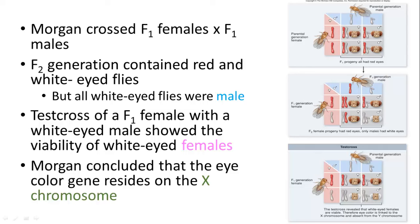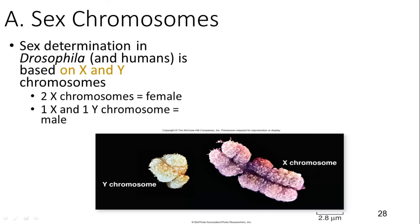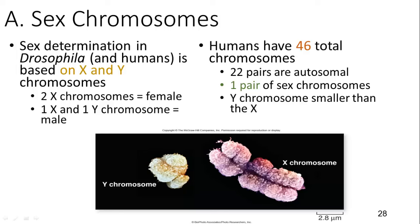If the gene is on the X chromosome, which is larger than the Y chromosome, and a male has only one X with the white eye allele, it is more likely they will show expression of the trait. Sex determination in Drosophila and humans is based on the X and Y chromosome inheritance pattern. If you have two X's you're female; if you have one X and one Y you're male.